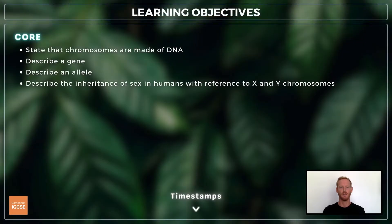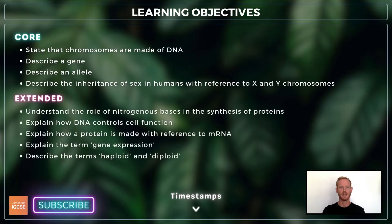For topic 17.1, you need to know about chromosomes, DNA, genes, alleles and the inheritance of sex in humans with reference to X and Y chromosomes. For extended, you also need to know about the role of DNA in the production of proteins, explain how a protein is made and understand the terms haploid and diploid.